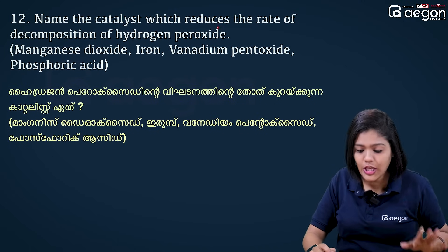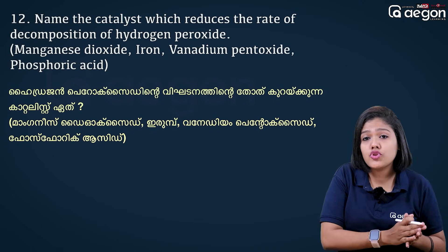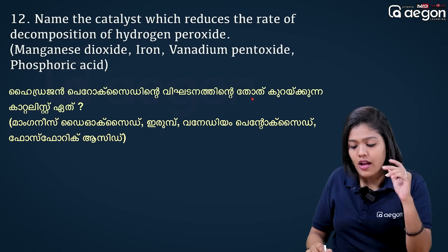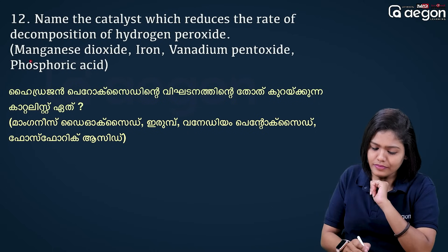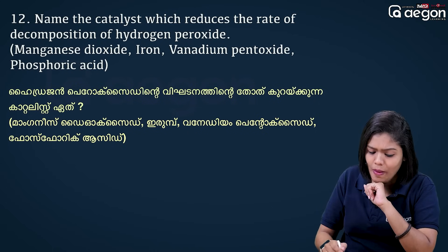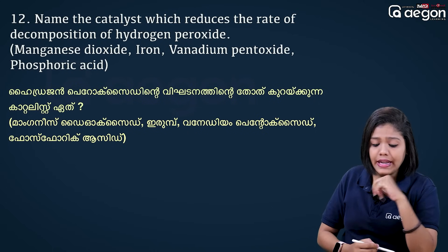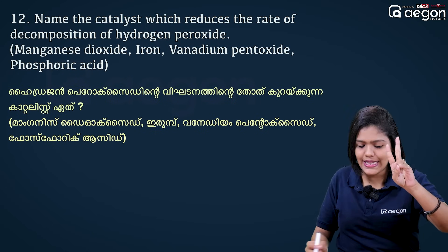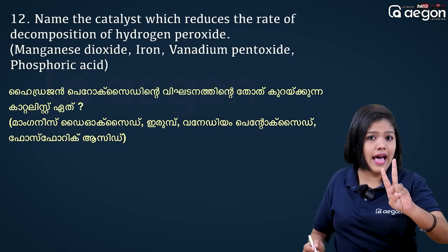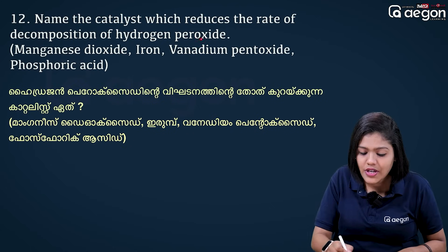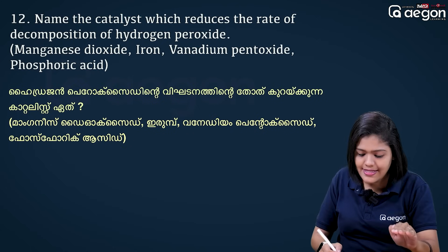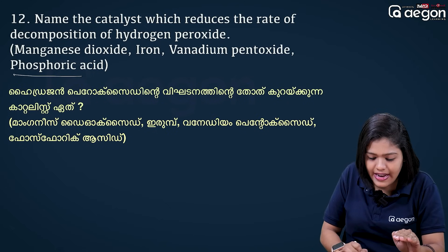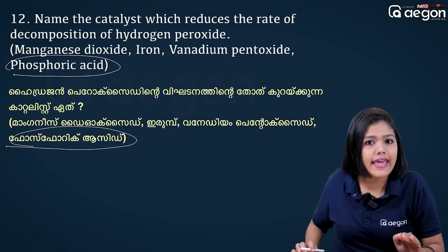Name the catalyst which reduces the rate of decomposition of hydrogen peroxide. The options are manganese dioxide, iron, vanadium pentoxide, and phosphoric acid. Phosphoric acid reduces the rate of decomposition of hydrogen peroxide — we call it a negative catalyst.